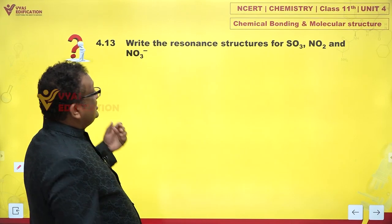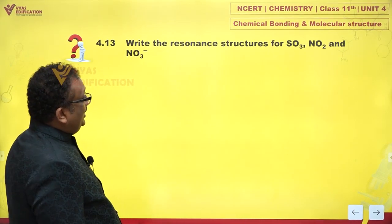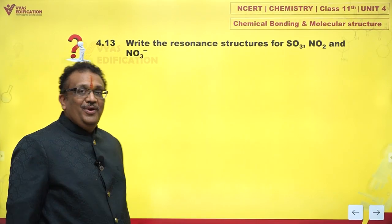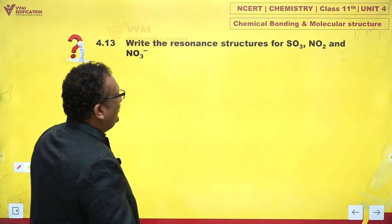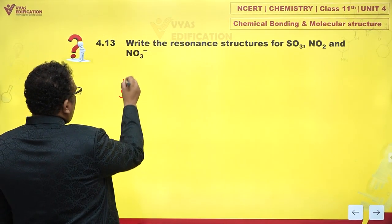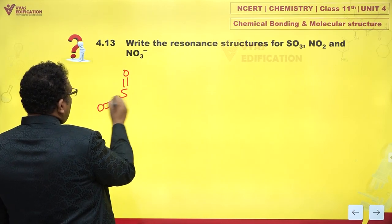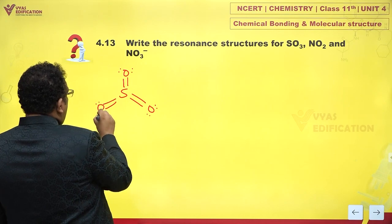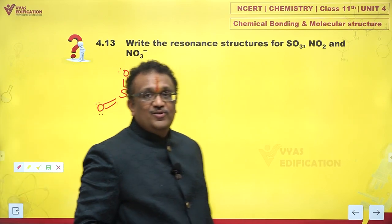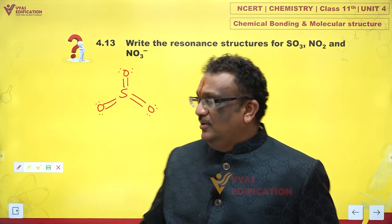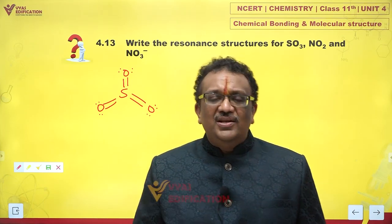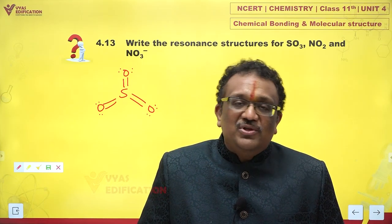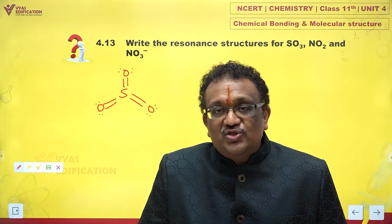The question says write down the resonance structures for SO3, NO2, and NO3 minus. Let's take a look. If we have SO3, it would go very lovingly like this and would not have any significant resonating structures, simply because SO3 is the way it is. The most stable structure is this, and the other structures would not be close to stability as this one.